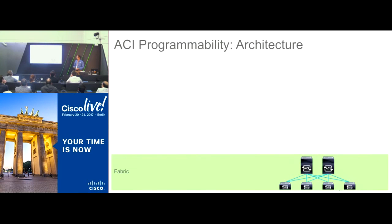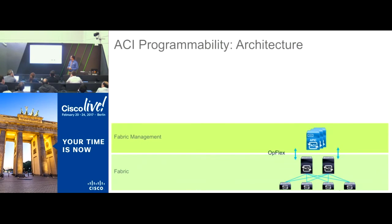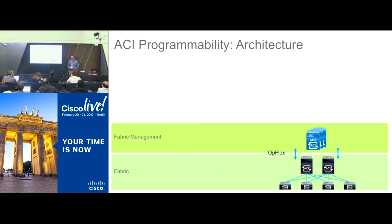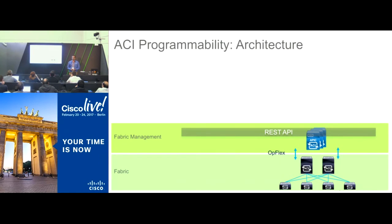The architecture has a spine and leaf fabric managed through APIC, which is the controller. If you want to automate or configure something on APIC, the mechanism to do that is through REST APIs. Everything that touches the fabric — talking to the controller — goes through REST APIs.